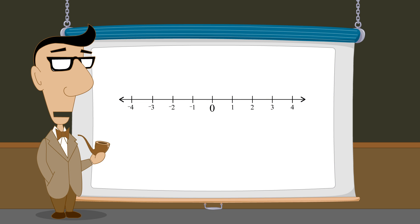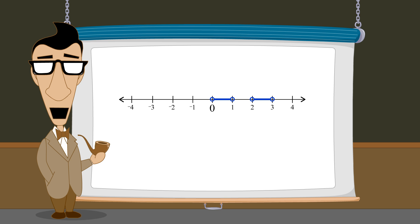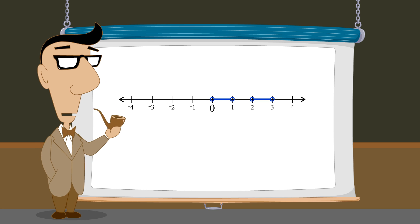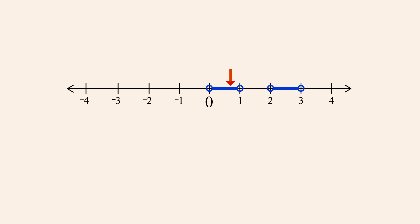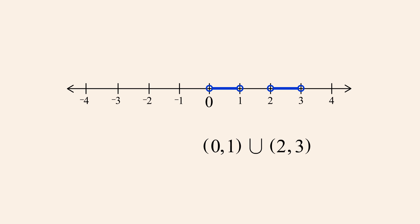As another example, let's create one set containing all the numbers between zero and one and between two and three, but not including the endpoints. In set builder notation, this is the set of all numbers x such that x is greater than zero and less than one, or greater than two and less than three. If we pick one number between zero and one and a second number between two and three, any number between one and two lies between these two numbers but is not a member of the set. Therefore, this set cannot be represented by a single interval. However, if we take the open interval between zero and one and the open interval between two and three, then the union of these two intervals creates the desired set.